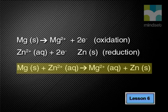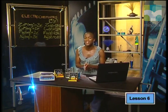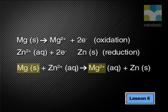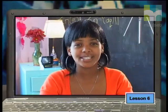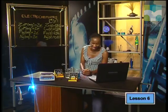From the overall equation you can see that the magnesium electrode will decrease in mass since Mg solid goes to Mg²⁺ in aqueous solution. At the same time, Zn²⁺ ions in solution form zinc atoms on the electrode, meaning the zinc electrode increases in mass in the cell.